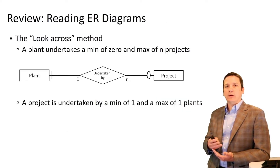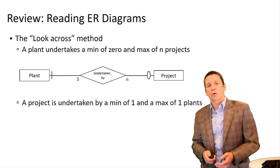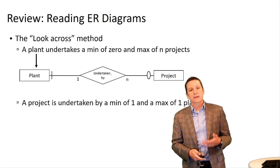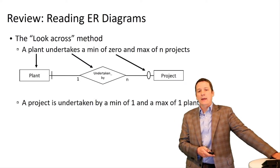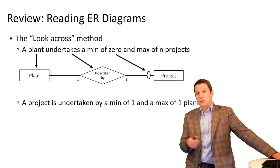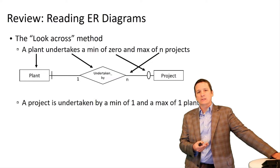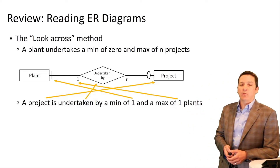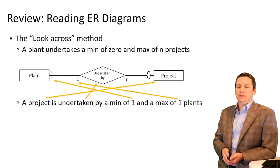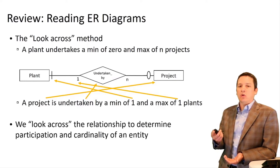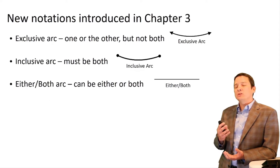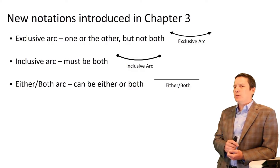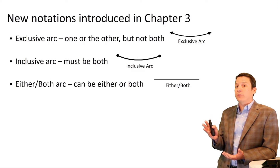We talked about how to read these diagrams using the look-across notation, where we get the participation and cardinality for an entity by reading across the relationship. For example, a plant undertakes a minimum of zero — reading the participation constraint across the relationship — and a maximum of many projects. Going the other direction, a project is undertaken by a minimum of one and a maximum of one plant — exactly one plant in this case.